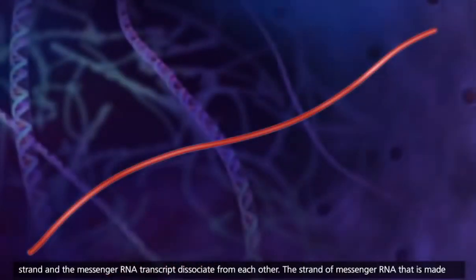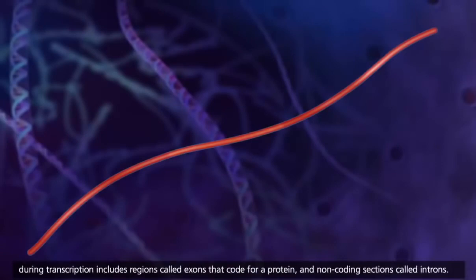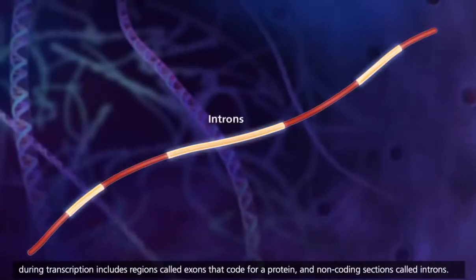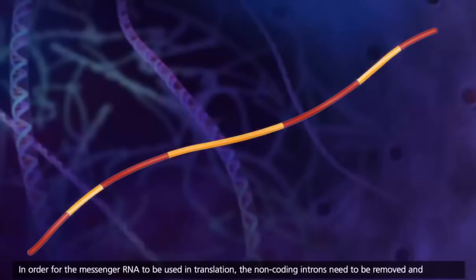The strand of messenger RNA that is made during transcription includes regions called exons that code for a protein, and non-coding sections called introns. In order for the messenger RNA to be used in translation, the non-coding introns need to be removed.